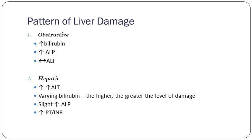Patterns of liver damage can be obstructive or hepatic. Obstructive liver damage — any obstruction in the bile ducts gives you raised bilirubin, raised ALP, raised gamma-GT, and normal ALT. Hepatic damage — very high ALT, varying levels of bilirubin, a slight rise in ALP, and a very high prothrombin time.